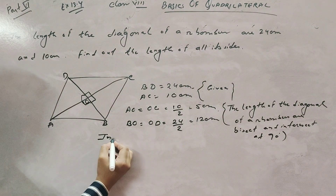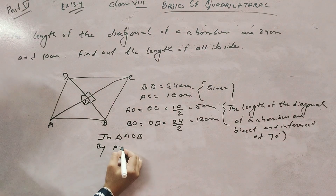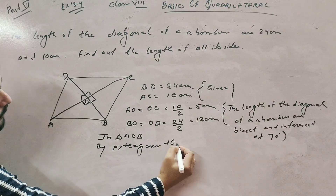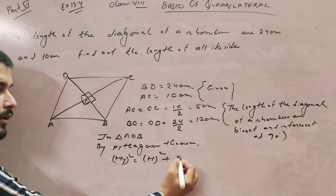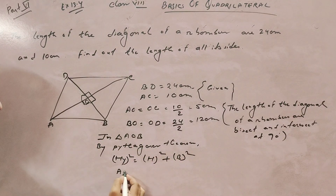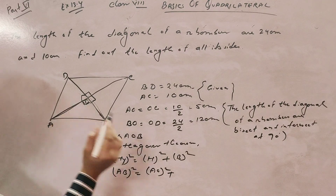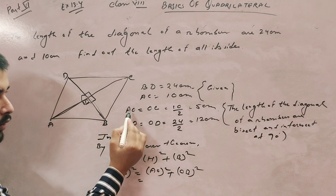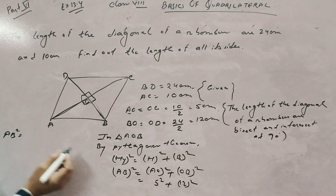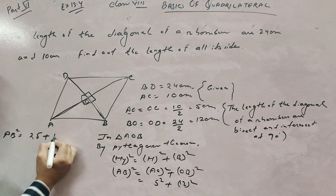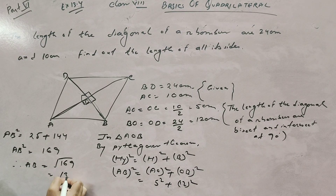In triangle AOB, the angle at O is 90 degrees, and the side opposite to 90 degrees is always the hypotenuse. By Pythagoras theorem, AB squared equals AO squared plus OB squared. AO is 5 and OB is 12. So AB squared equals 5 squared plus 12 squared = 25 + 144 = 169. Therefore AB equals root under 169, that is 13 centimeter.